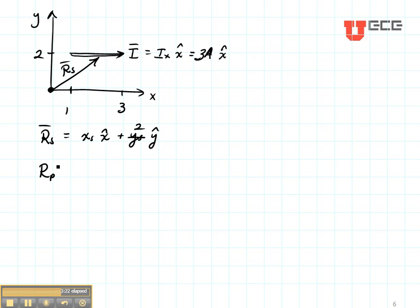Now let's write RP. RP is the vector going from the origin to the location where I would like to find the magnetic field. Let's say that I want to find the magnetic field any place on the Y axis. The equation for that vector is XP in the X direction plus YP in the Y direction. But we can see that any place that I want to find the magnetic field, XP is equal to 0.